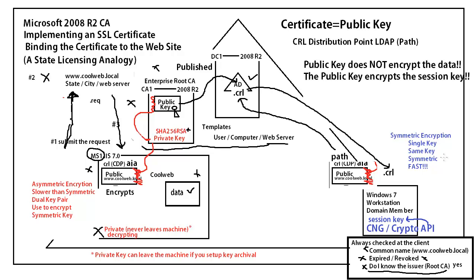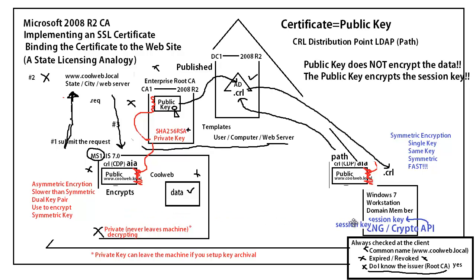The ultimate goal is to encrypt the data with the session key. But to encrypt the data with the session key, what we have to do is get the session key on both sides. The challenge, or the trick, is: how do we get this session key from the workstation, have it traverse the wire, and end up on the server — so that anything we encrypt with the session key here can be decrypted on the server with the same key. We're using what's called symmetric encryption, but how do we get this key over there? What happens if a bad guy intercepts this key?